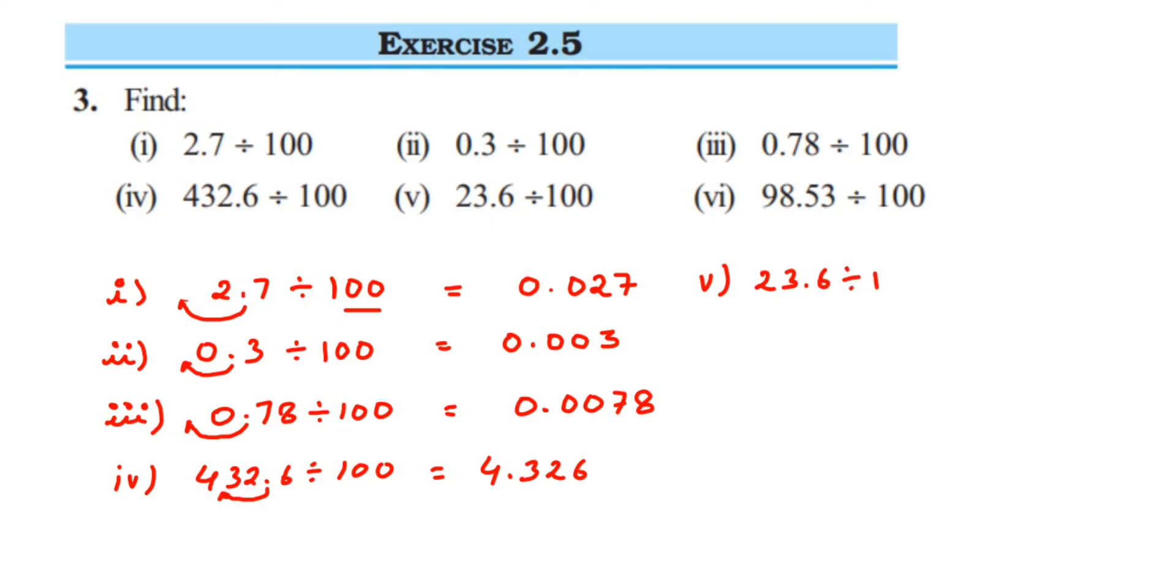Then sixth question, last one: 98.53 divided by 100 is equal to two places to the left side, so 0.9853.